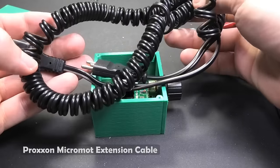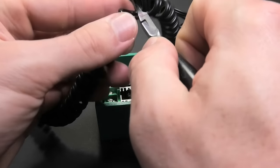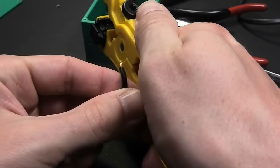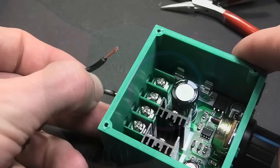It is handy to buy a Proxxon Micromod extension cable. It is the most expensive part of this project, because it costs 7 dollars. Cut the cable and remove the insulation. I drew the correct connection on the box, so you cannot make it wrong.